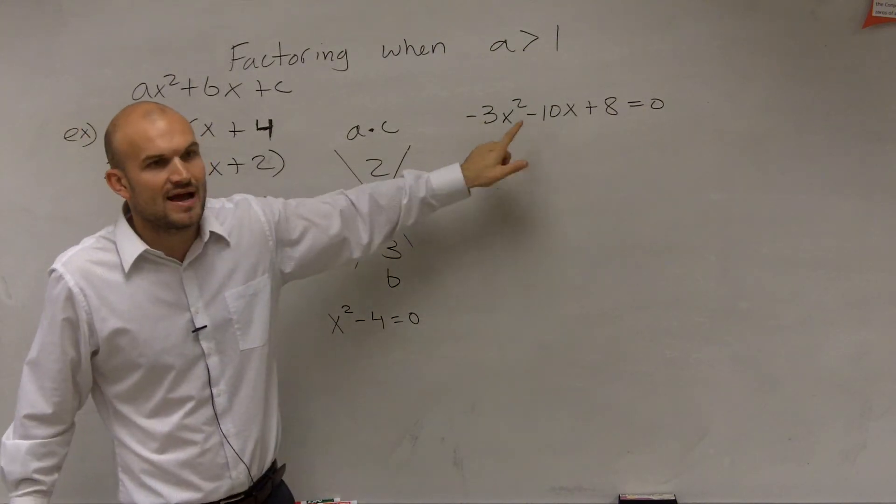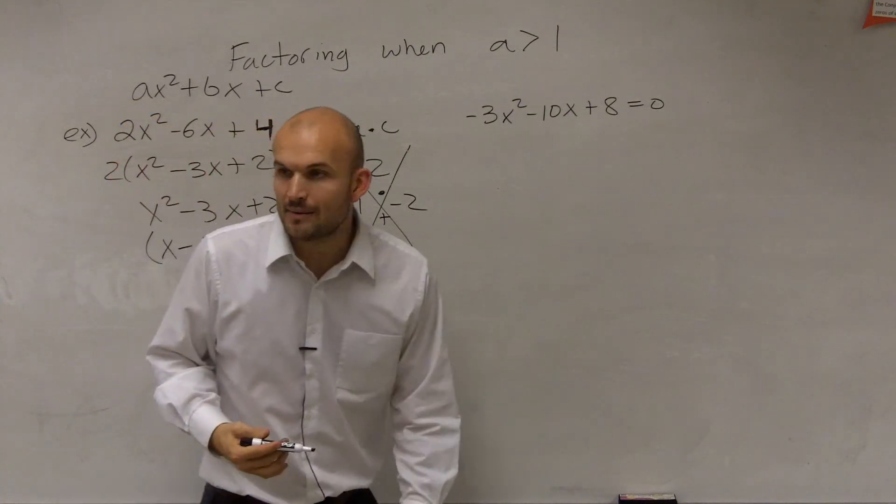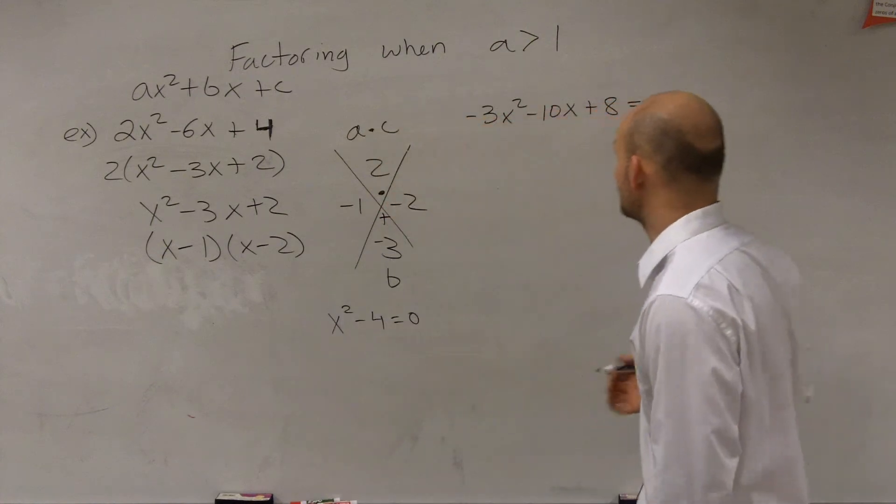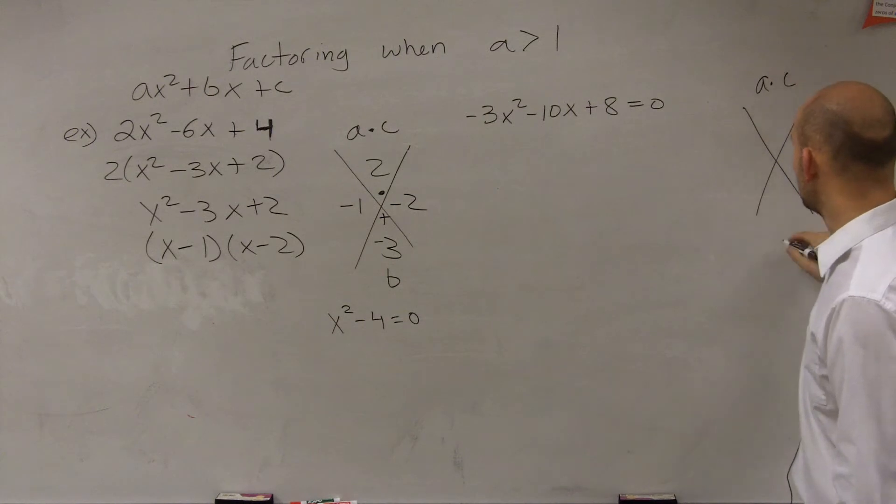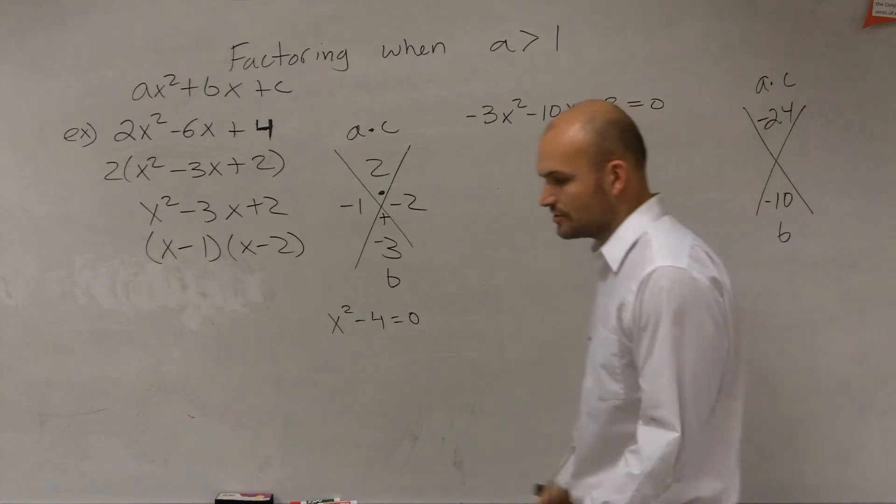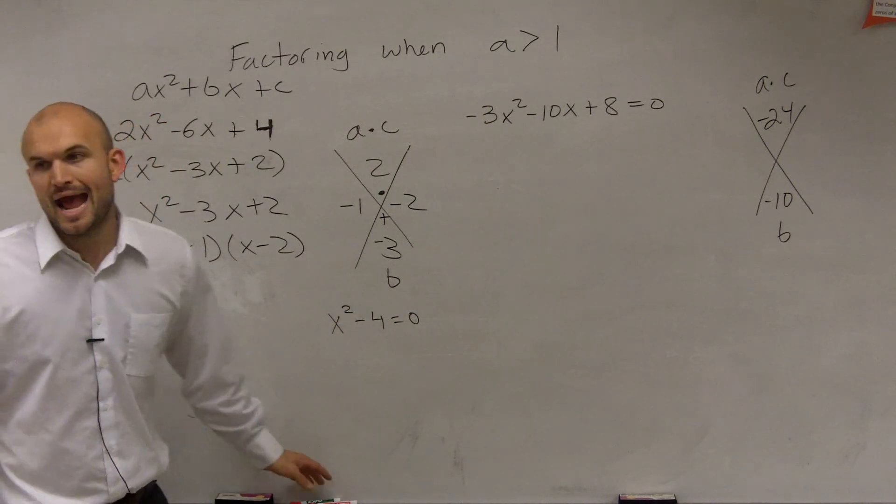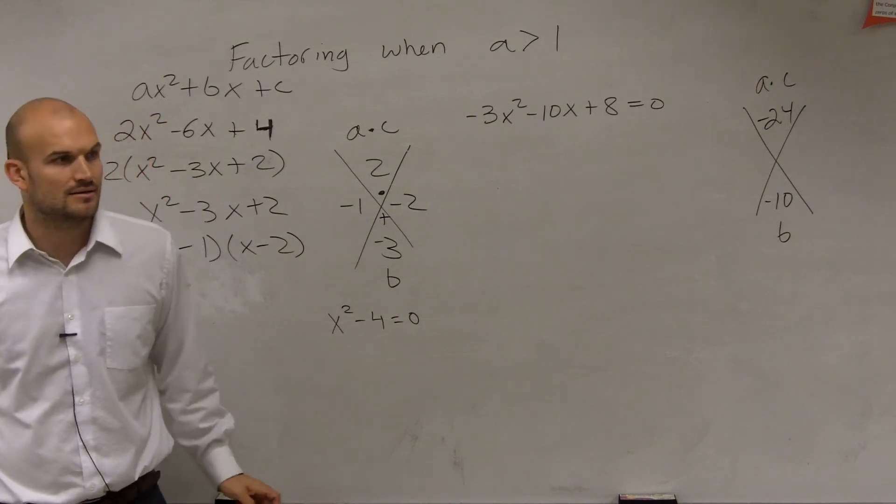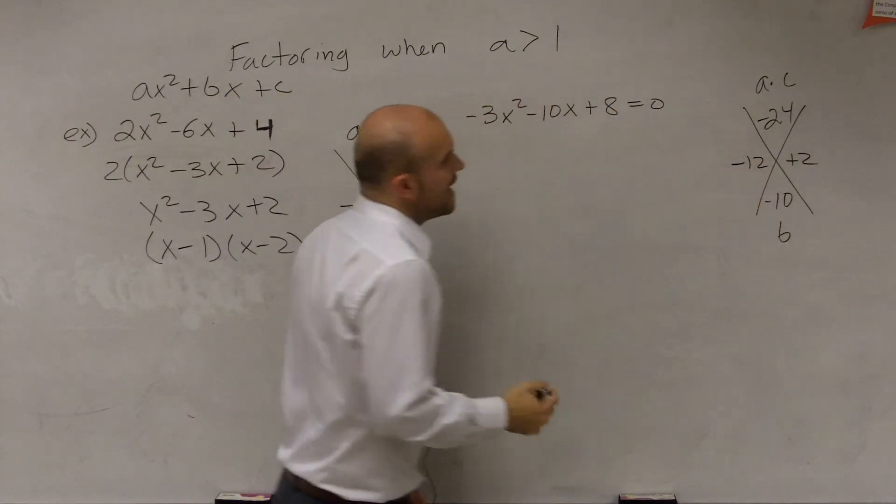So you can still solve the problem in a similar fashion. Still do your a times c—that's why a times c never changes. a times c is -24, and b is -10. What two numbers multiply to give me -24 but add to give me -10? Very good.